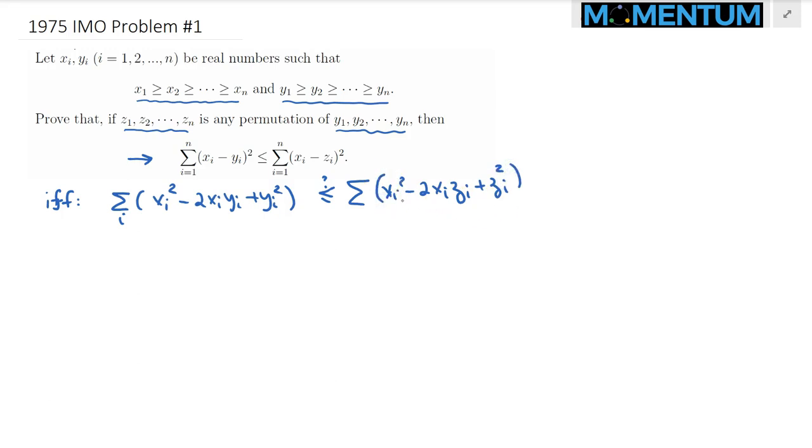We can go ahead and, making use of the properties of the summation symbol, split those three parts and the three parts on the right-hand side as well. On the left-hand side, we have summation over i, x sub i squared minus 2 times summation x sub i times y sub i.